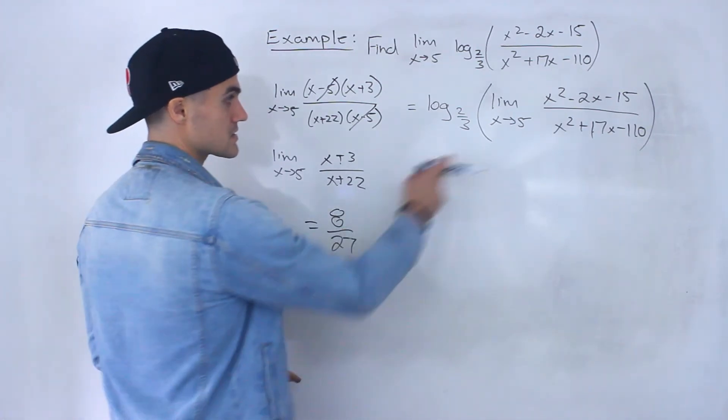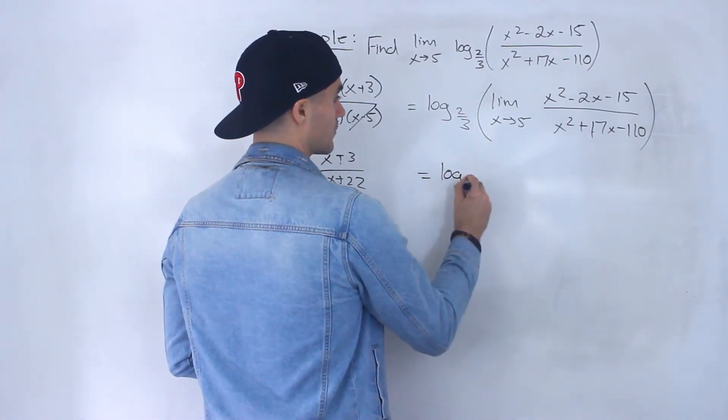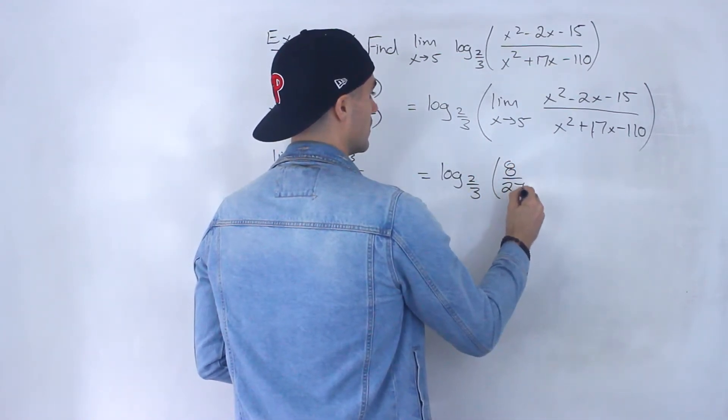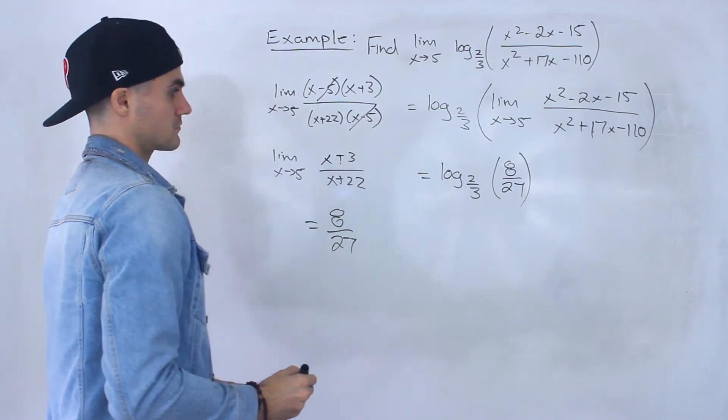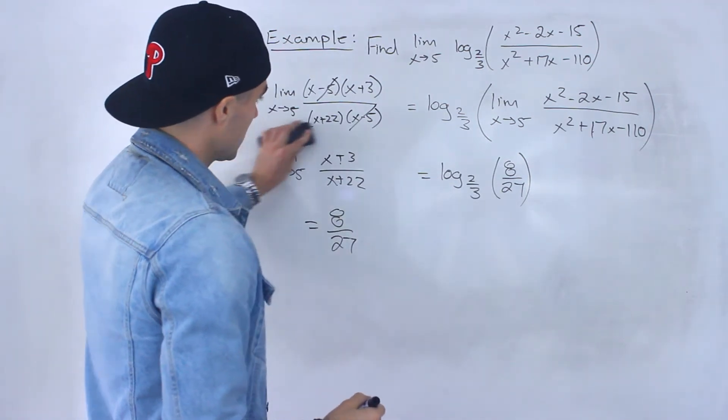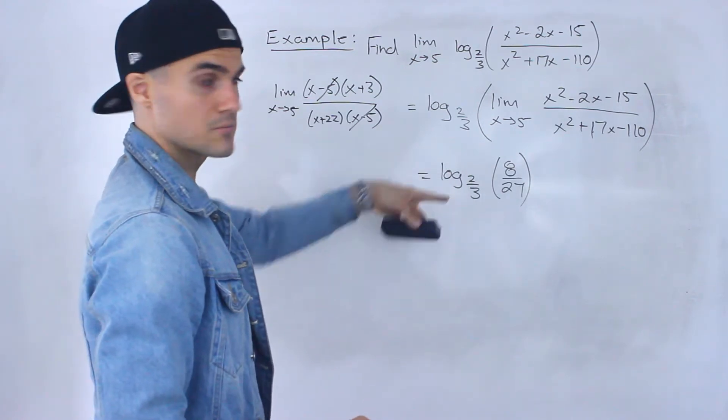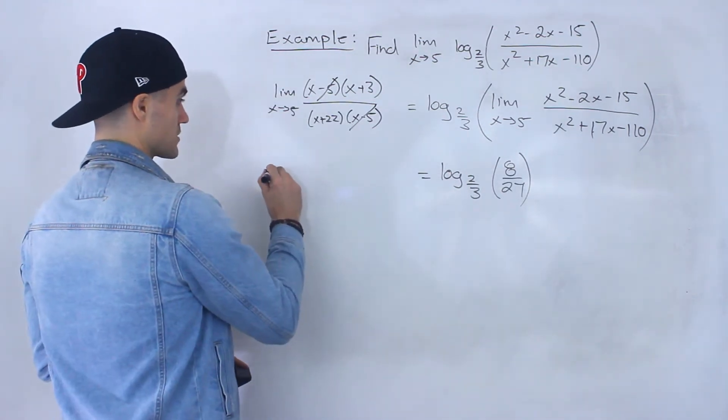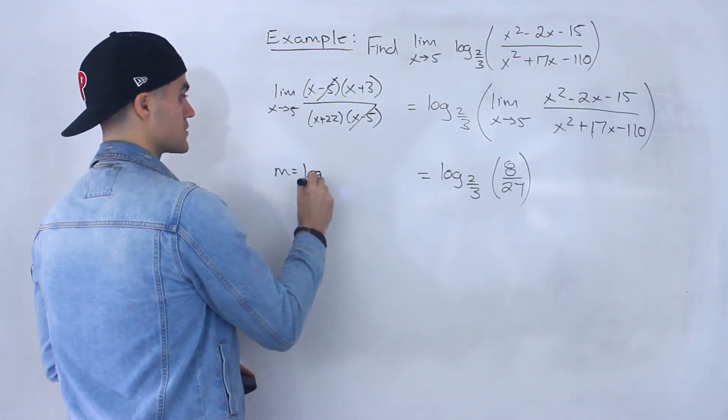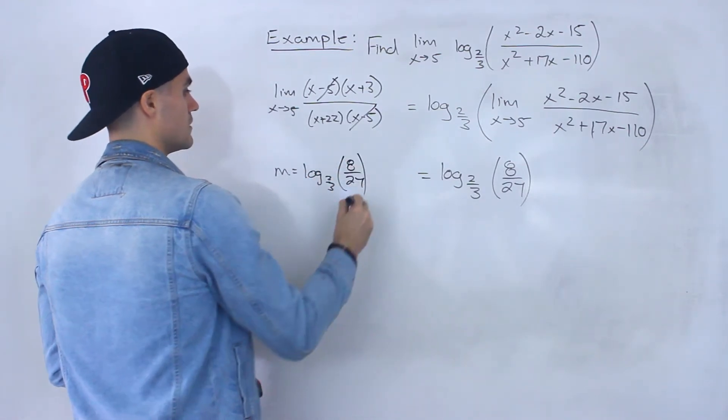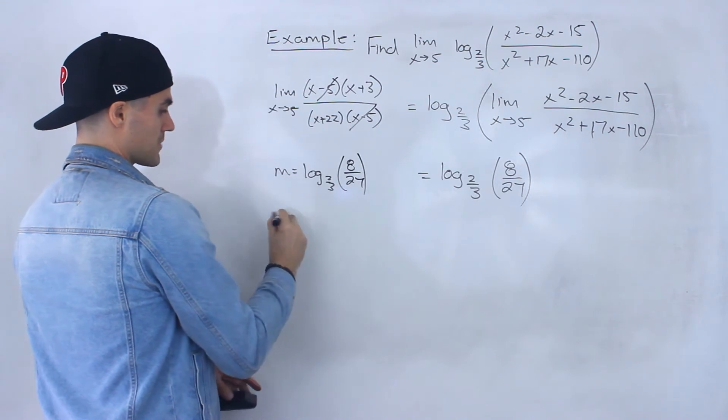So we could just take this, plug it in for the bracket, log base 2 over 3 of 8 over 27. And then from here, what we can do is just simplify this logarithmic expression. So if m is equal to log base 2 over 3, 8 over 27, we can change this to exponential form.